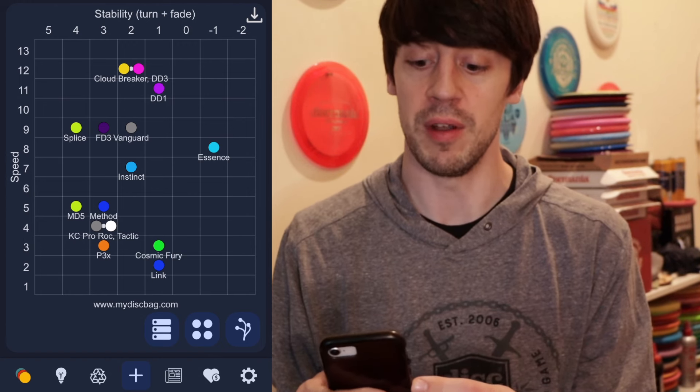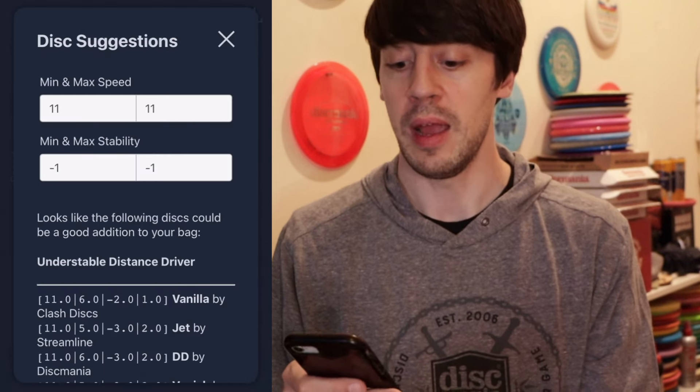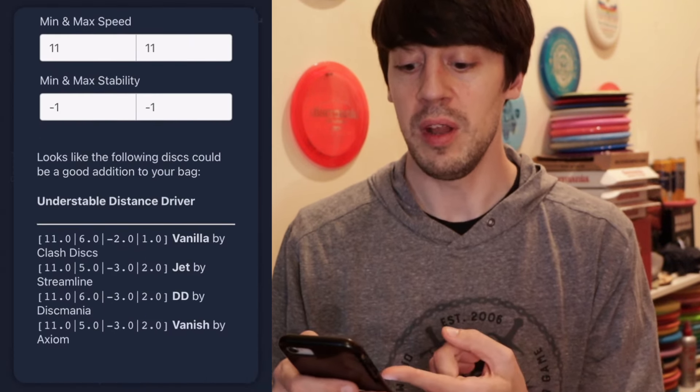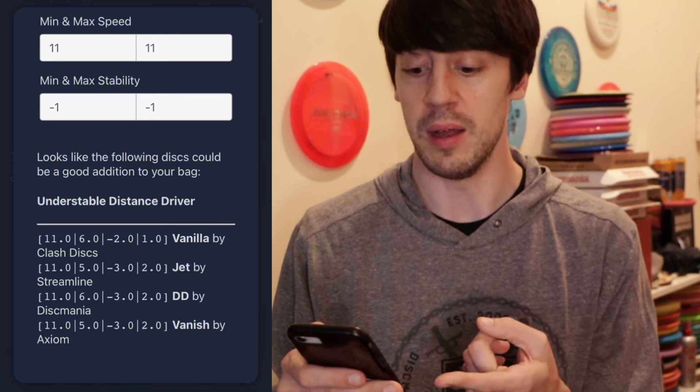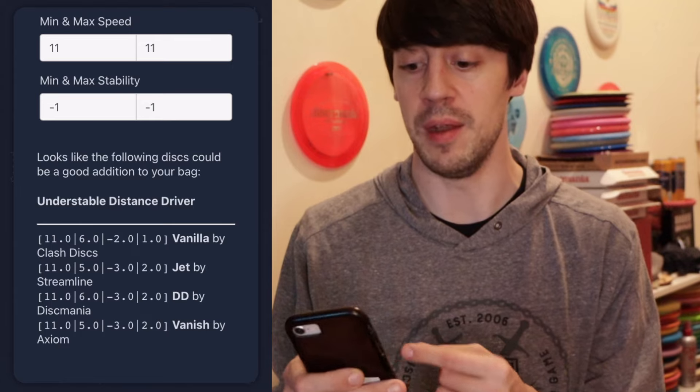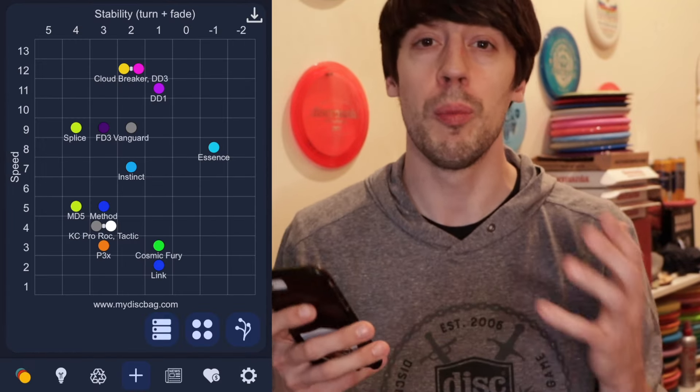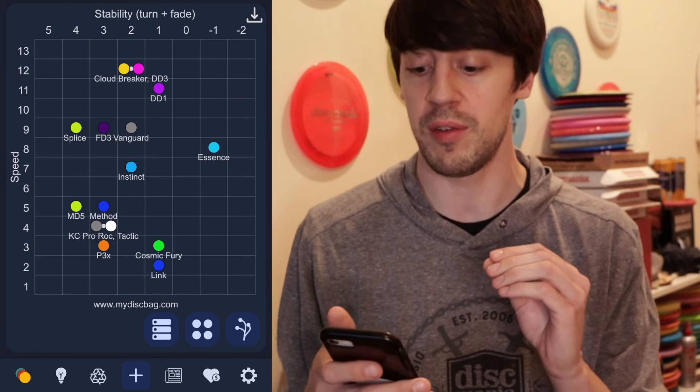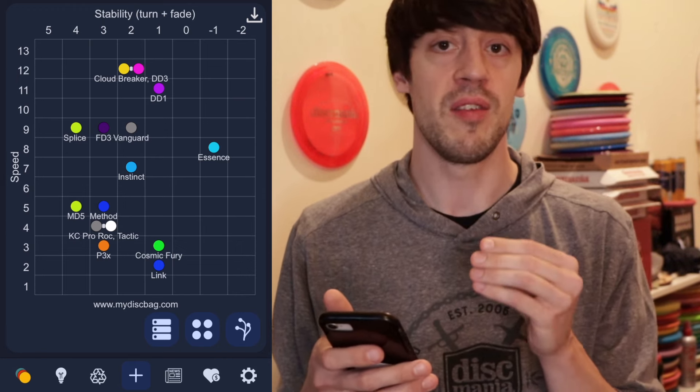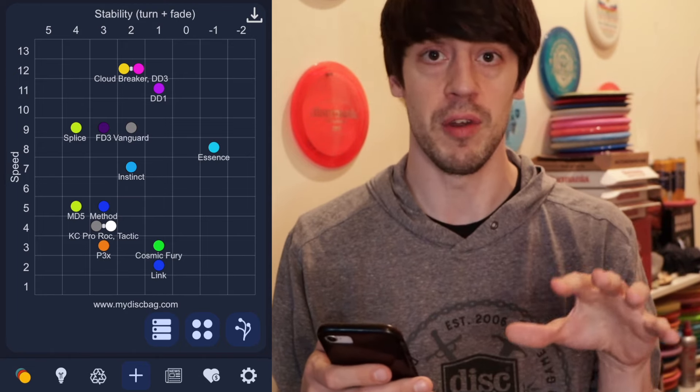And so if I go up to driver for instance and I click up here maybe like an 11-speed flippy driver and I get some suggestions, you can even see the DD by Discmania is right there. So you can check out what brand you have and you can see the name of the discs. And I just thought that this whole chart was super cool. Like I've never really seen anything like it before and it just gives you a different insight into your bag than what you think you might have in your own head. So I think that this is my favorite tab...